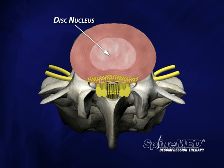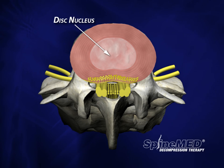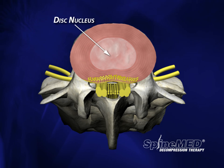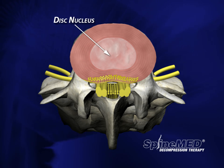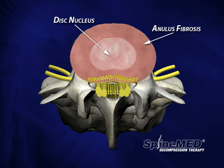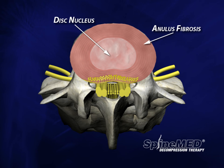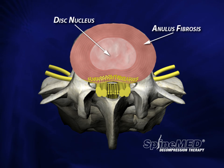Water is held within the nucleus by tiny sponge-like molecules called proteoglycan aggregans. These super sponges have an amazing ability to attract and hold over 500 times their own mass in water. The nucleus is surrounded by the annulus fibrosus — a tough, fibrous material made primarily of type 1 collagen, whose primary job is to keep the nucleus contained in the center of the disc.